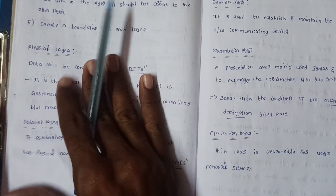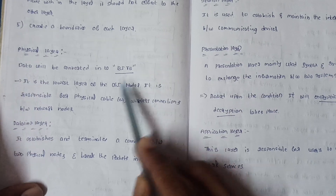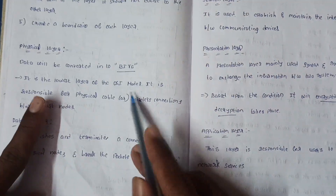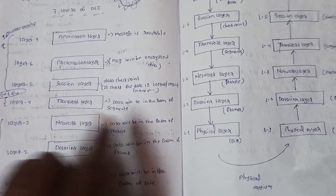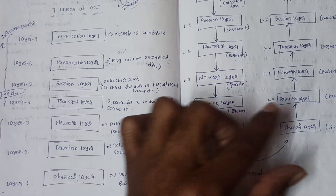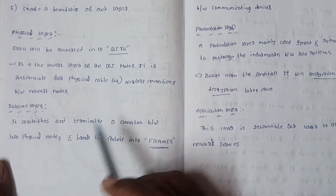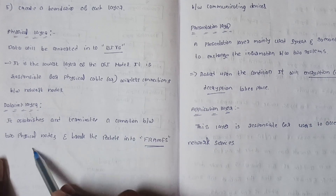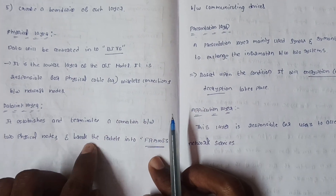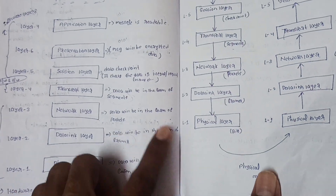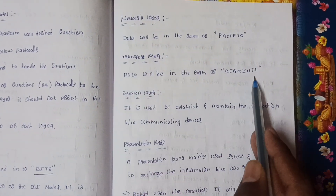Now explaining each layer: the Physical Layer is the lowest layer of the OSI model — data is converted into bits. It is responsible for the physical cable and wireless connection between network nodes. The Data Link Layer establishes and terminates a connection between two physical nodes and breaks packets into frames. The Network Layer converts data into the form of packets. The Transport Layer converts data into segments.